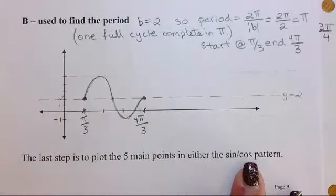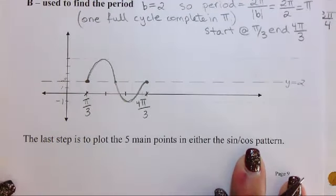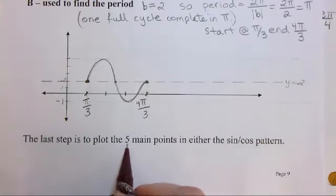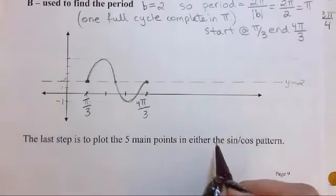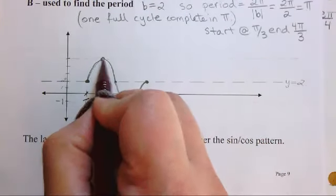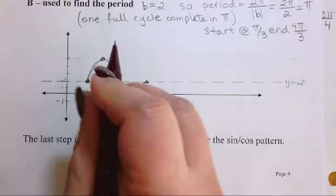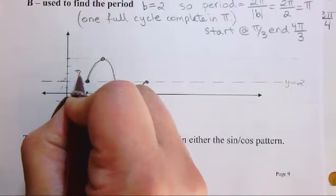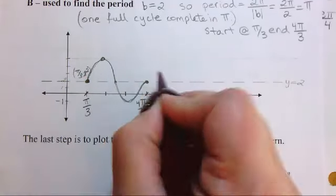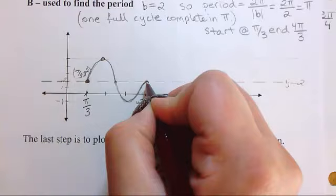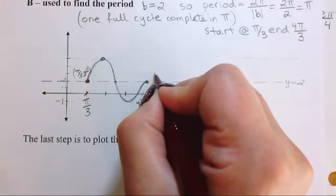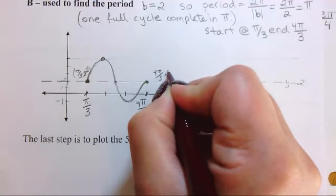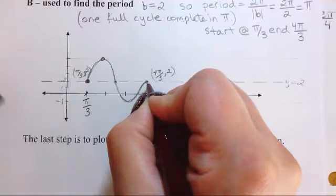All right, so you have one last task to do, and I'm going to leave it to you to use your brain power to figure this out. I want you to label five main points on this graph. So where is this going to be? Well, we've got this right here. Okay, so I'll give you the easy ones. I'll give you this is π by 3 and two, that's where we start. This where we end is going to be 4π by 3, two. Okay, those are two of our points.